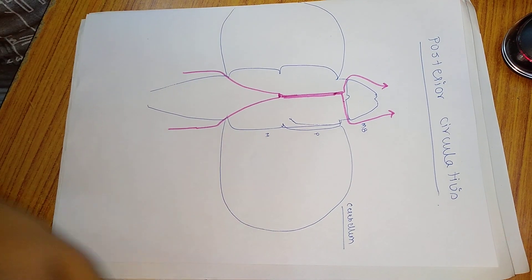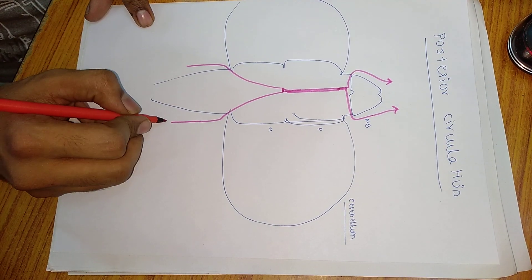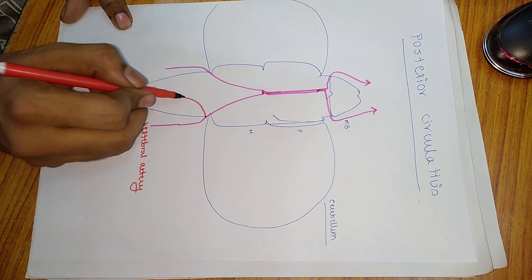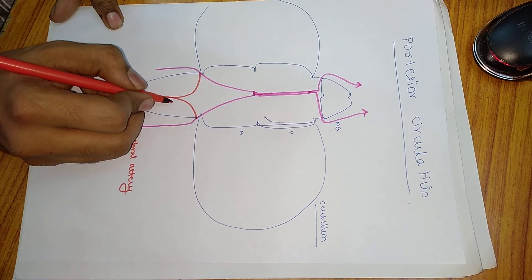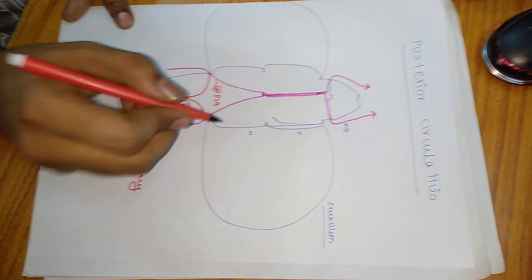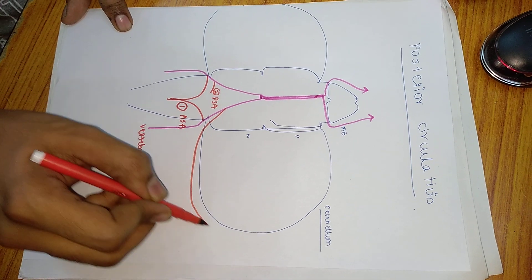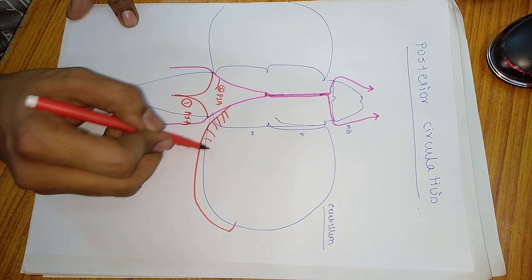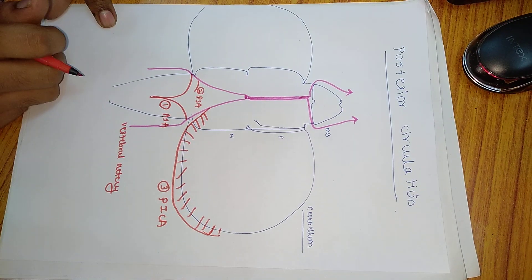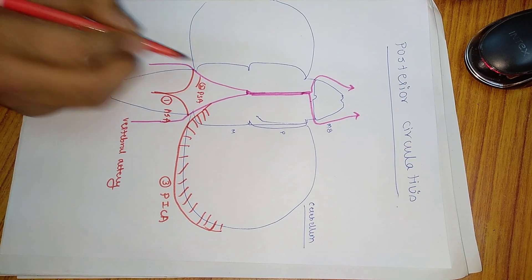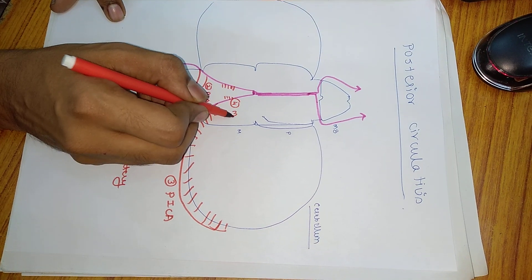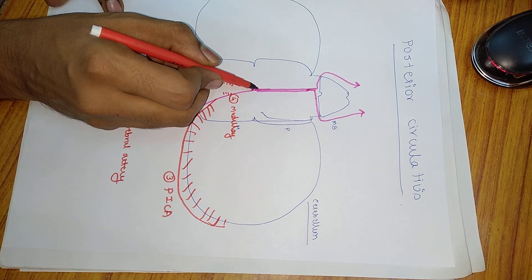Let us go into the branches one by one. First, of the vertebral artery — the first branch will be the anterior spinal artery, from both sides, which unites and forms a single anterior spinal artery. The second will be the posterior spinal artery; there will be two posterior spinal arteries. The third important one is the posterior inferior cerebellar artery (PICA).